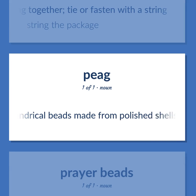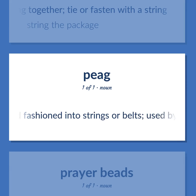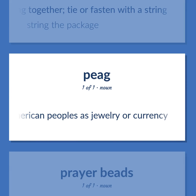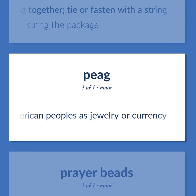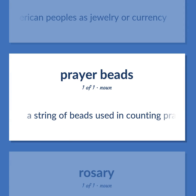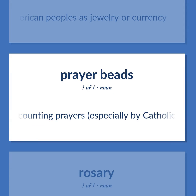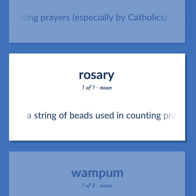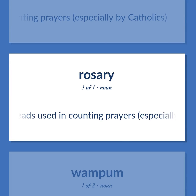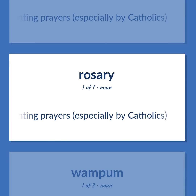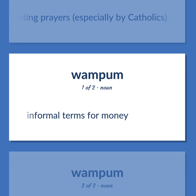Small cylindrical beads made from polished shells and fashioned into strings or belts, used by certain Native American peoples as jewelry or currency. A string of beads used in counting prayers, especially by Catholics. Informal terms for money.